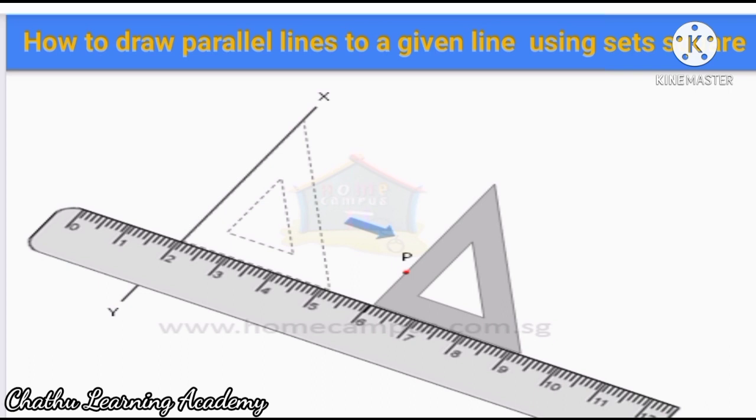As the second step, I will explain how to draw a parallel line to a given line. Here we use two mathematical instruments, ruler and set square. XY is the given line. You should keep your set square on the XY line as shown here. Here I have drawn it using dotted lines. Then after that you can move it towards the point P. If you draw a line through the point P, then that line will be parallel to XY.